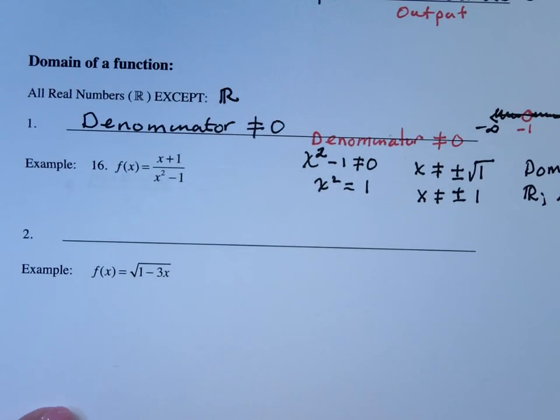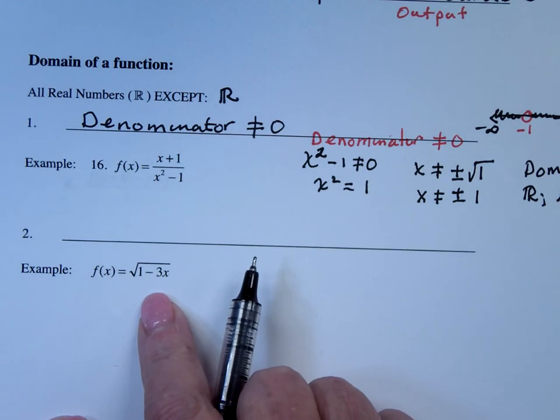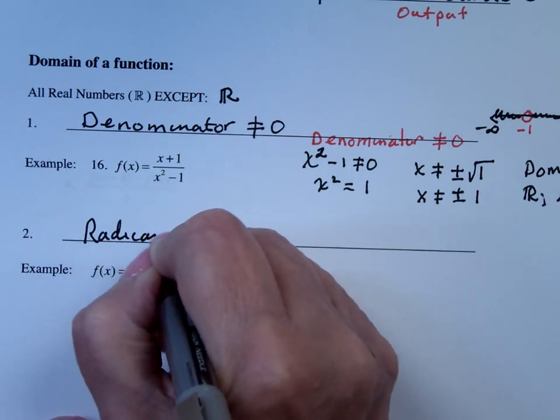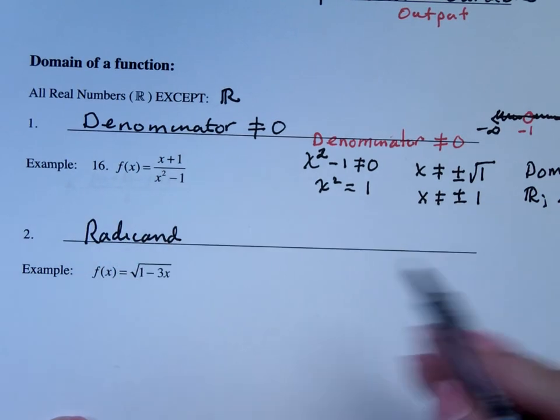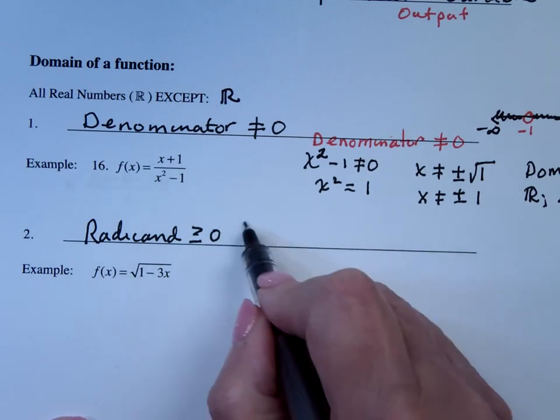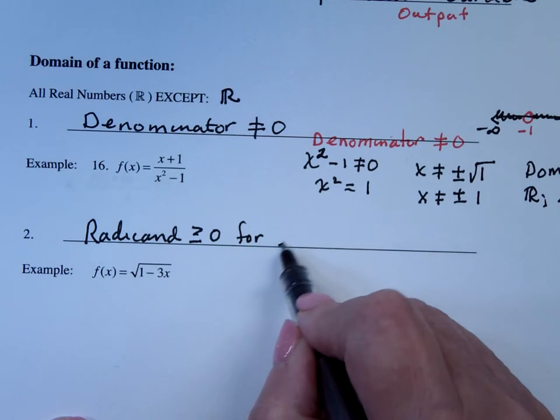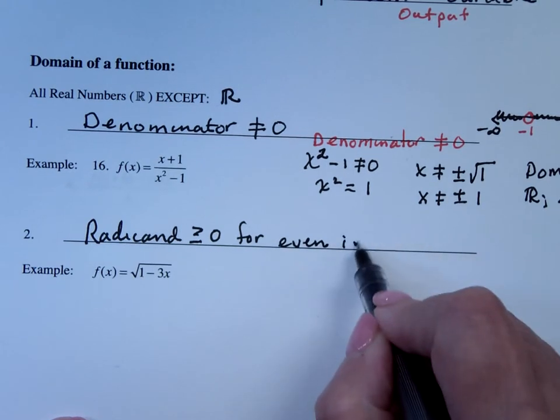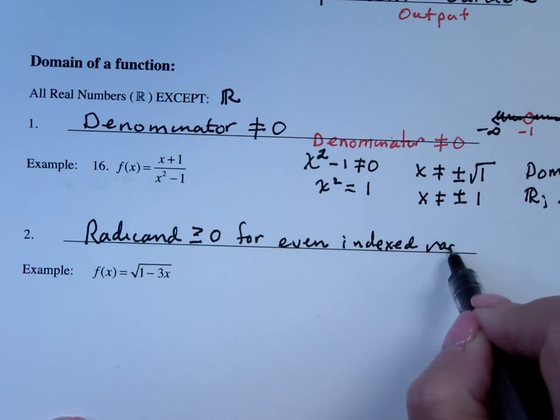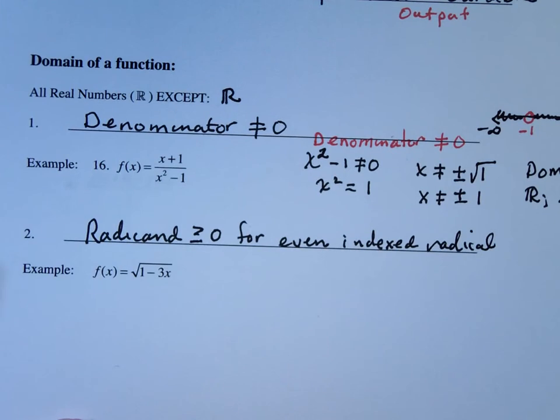The second thing that we need to concern ourselves about is that if I'm dealing with an even indexed radical, in this case square root, the radicand, which is what's under the radical, must be greater than or equal to 0, must be positive, for an even indexed radical.